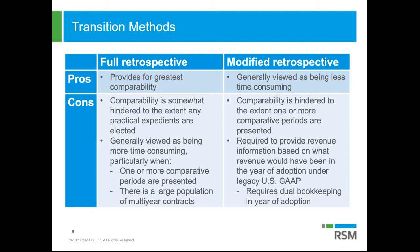This is generally viewed as being less time-consuming because you don't have to go back and look at in-process contracts or contracts relating only to prior periods that were not open on the date of adoption. Comparability is hindered slightly because the face of the financial statement shows two different methodologies. However, it does require dual bookkeeping in the year of adoption — two sets of books in order to comply with those disclosure requirements.